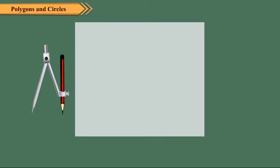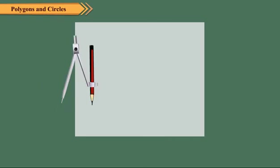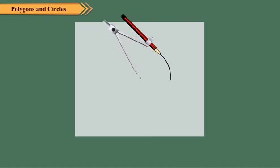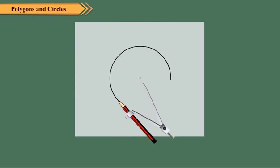We can also draw a circle using a compass. Fix a pencil in the compass. Keep the metal tip of the compass fixed on the paper. Open the compass as needed and move the pencil arm around keeping the metal tip fixed. The point marked by the metal tip of the compass is the centre of the circle.